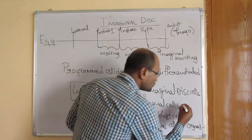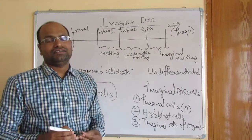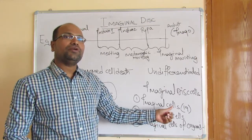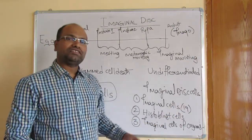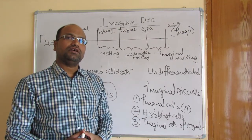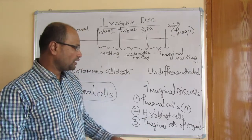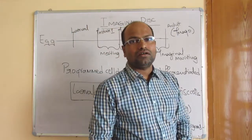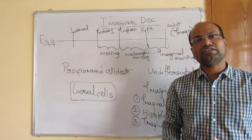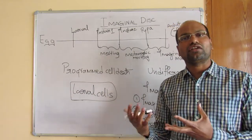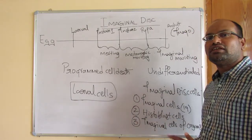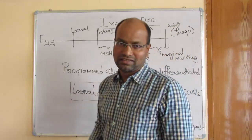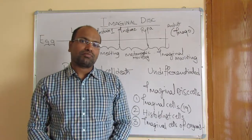There are around 19 imaginal discs present in Drosophila, and they help in the development of adult structures. Histoblast cells are responsible for development of the abdominal region in Drosophila. Imaginal cells present in different internal organs assist in the development of those internal organs. This is about the imaginal disc, imaginal disc cells, and how they play a vital role in the metamorphosis process in insects, especially in Drosophila.